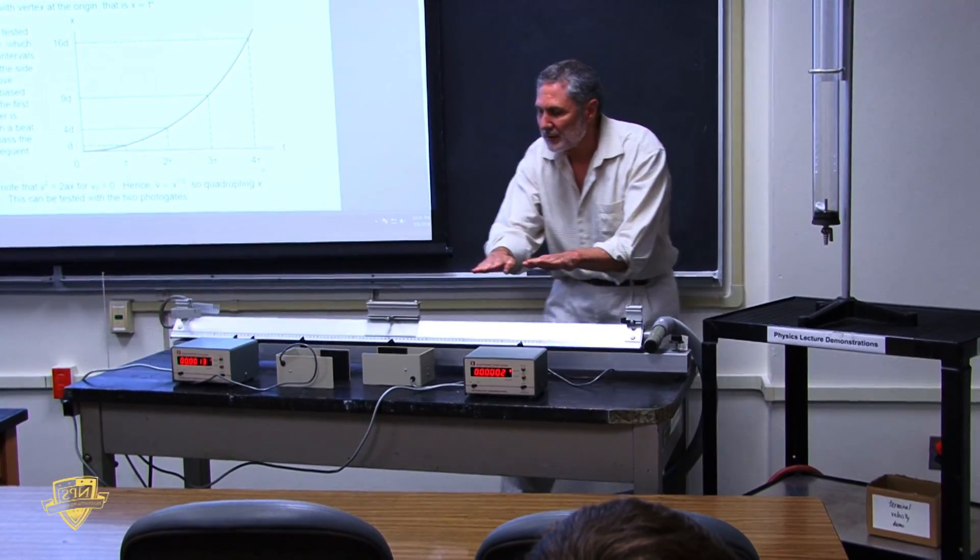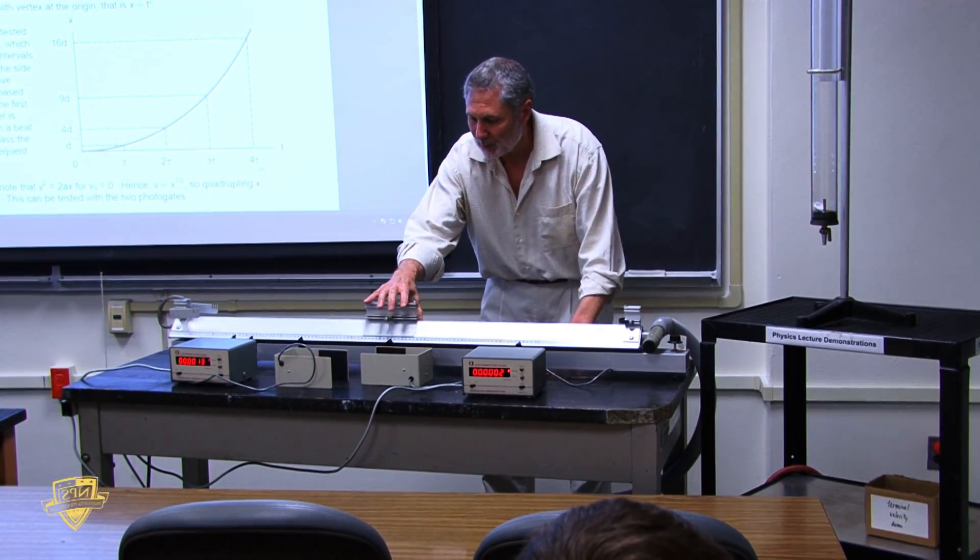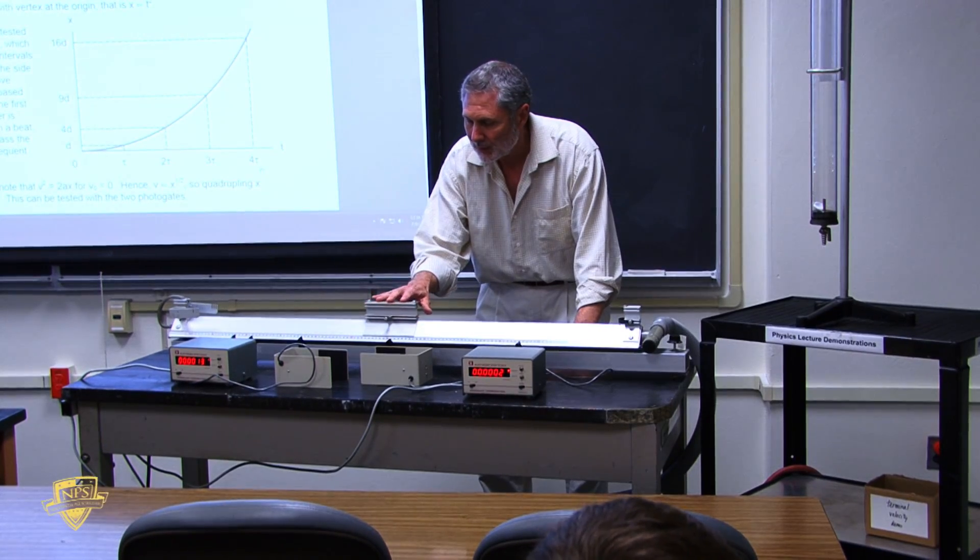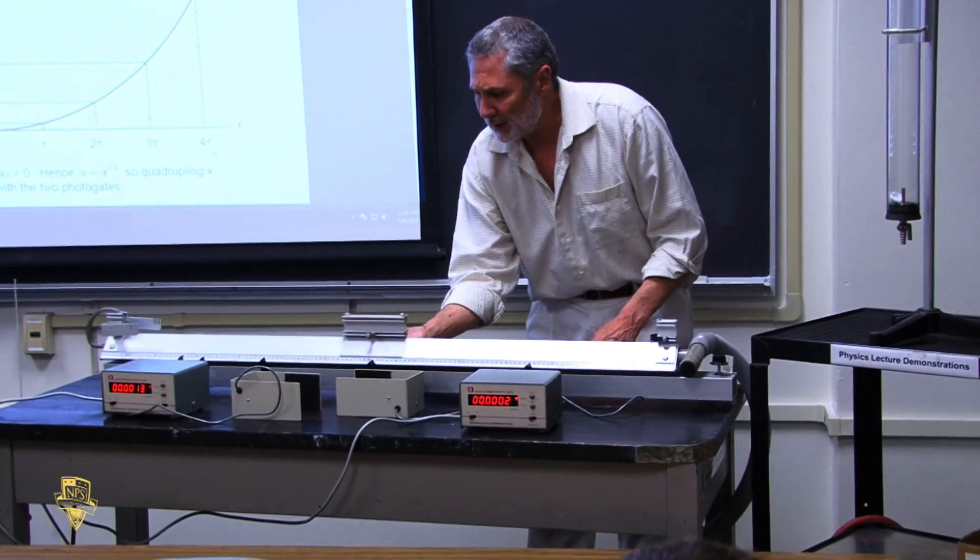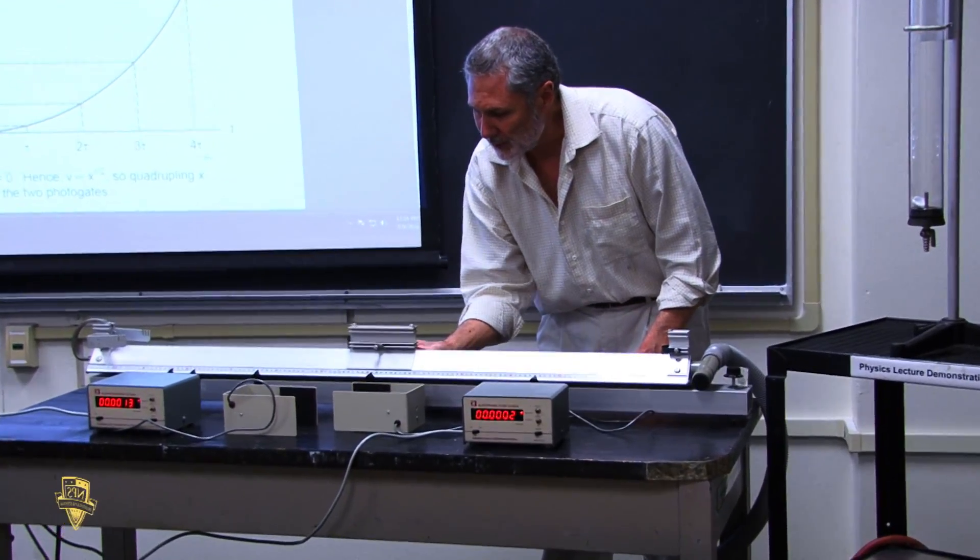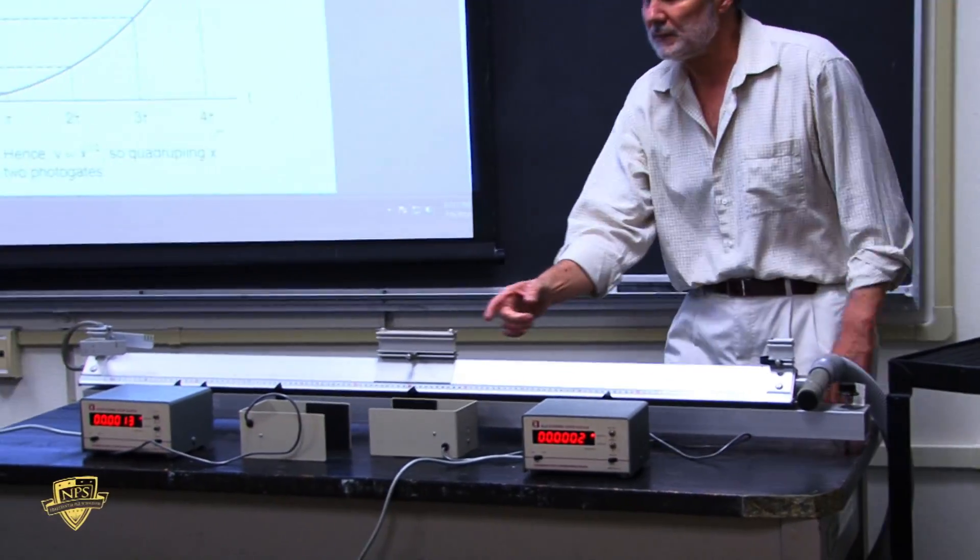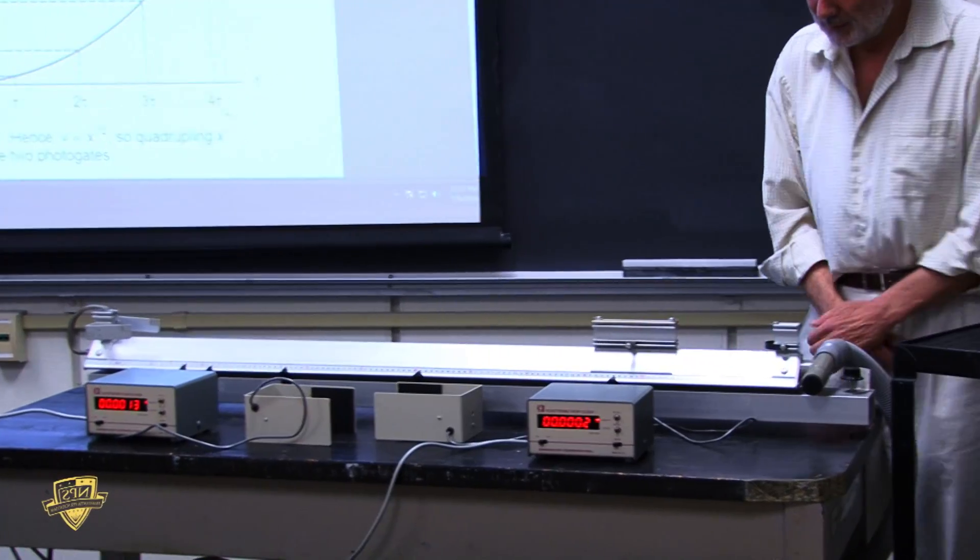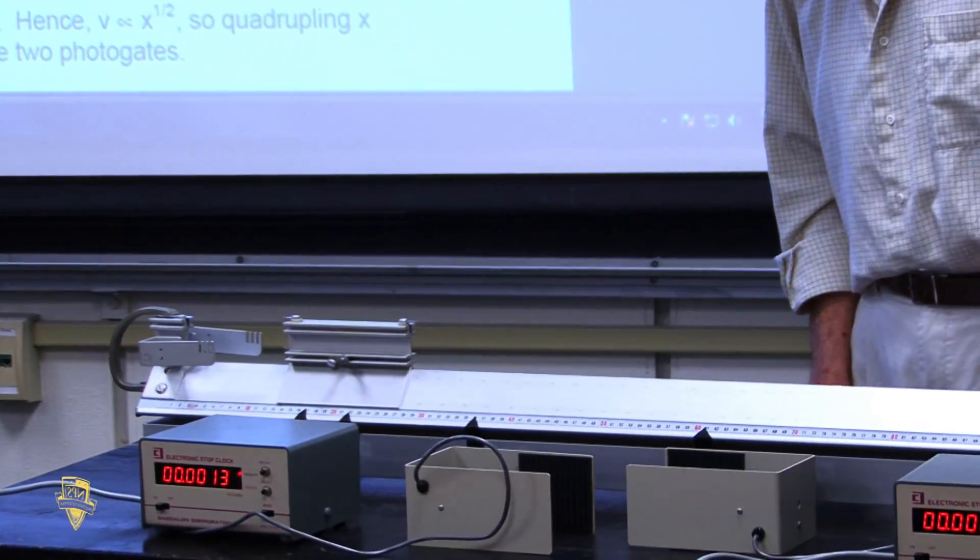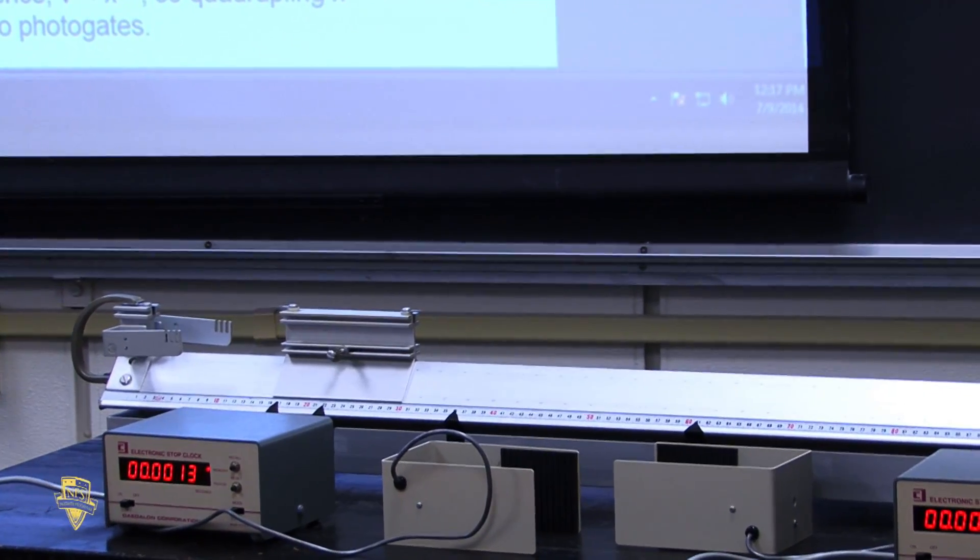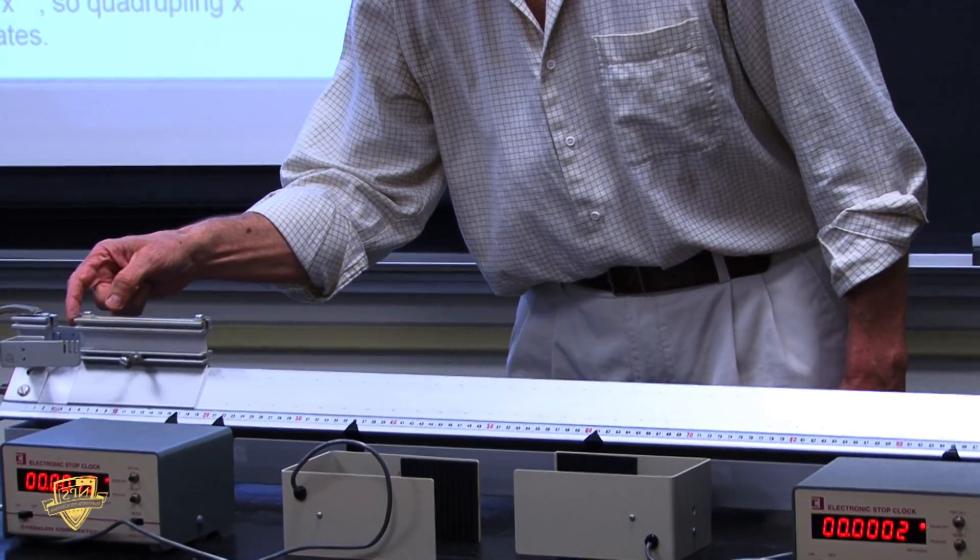These air tracks sometimes have a slight curvature, so they're not perfectly straight. The best way to level it, because there's no static friction, is to put it here and release it from rest and see if it stays there. It's pretty level. Let's check over here. Not quite level. So what if I give it some initial velocity?